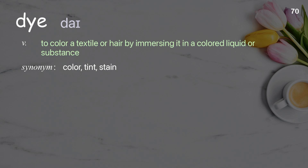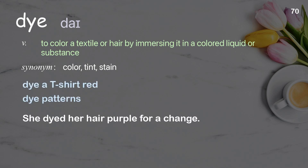Dye: to color a textile or hair by immersing it in a colored liquid or substance. Examples: dye a t-shirt red; dye patterns. She dyed her hair purple for a change.